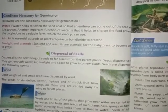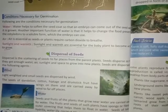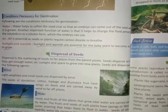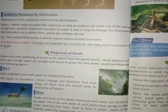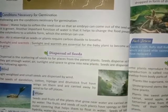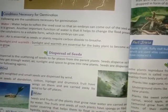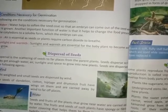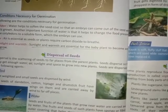Wind: lightweight and small seeds are spread by wind. The seeds of dandelion, cotton, hyptis and drumstick fruits have wings on them and are carried away by wind to far off places.